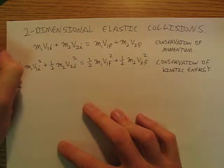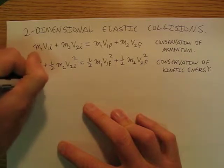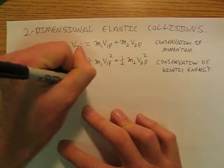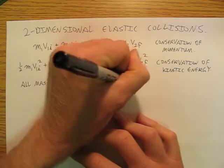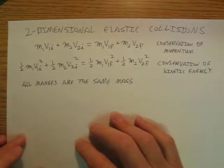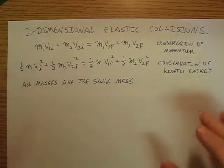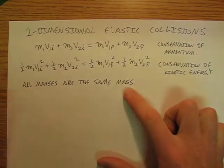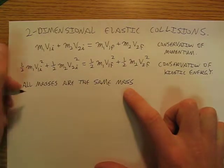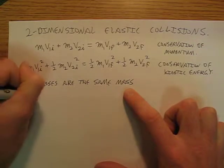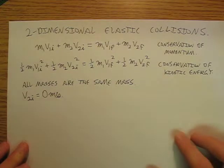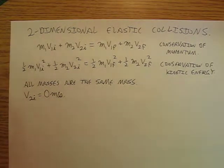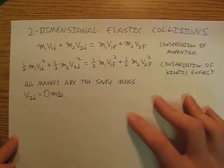We're going to say that all masses are the same mass. So if we're doing like pool balls, we're assuming that all the pool balls have the same mass. So that's going to be one simplification. And we're also going to say v2i is equal to zero meters per second. So we're going to say that one of our balls is not moving at the beginning of the collision. So one of the balls is stationary at the beginning of the collision. So that allows us some big simplifications.